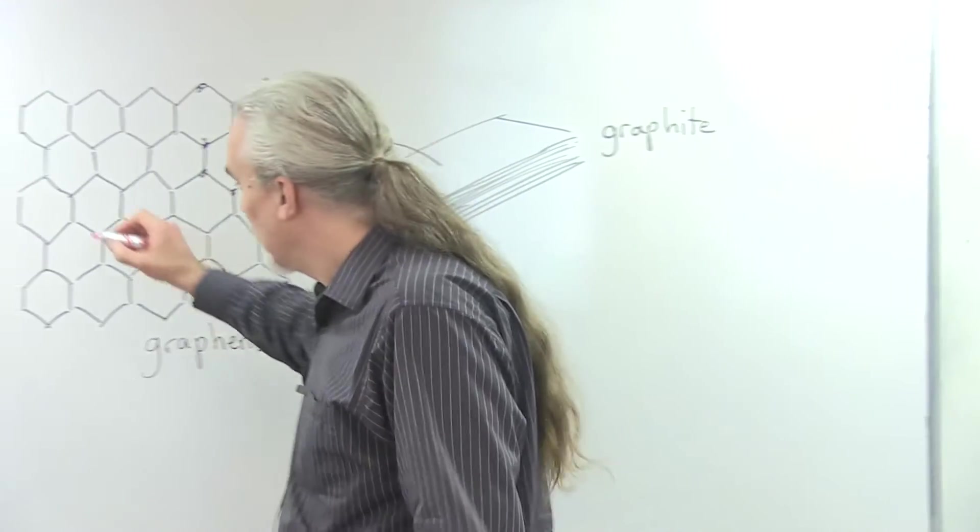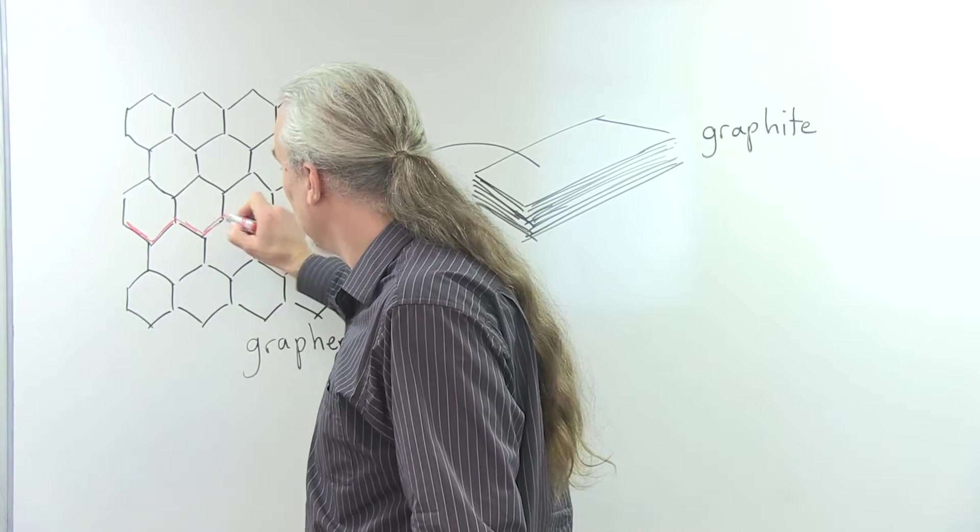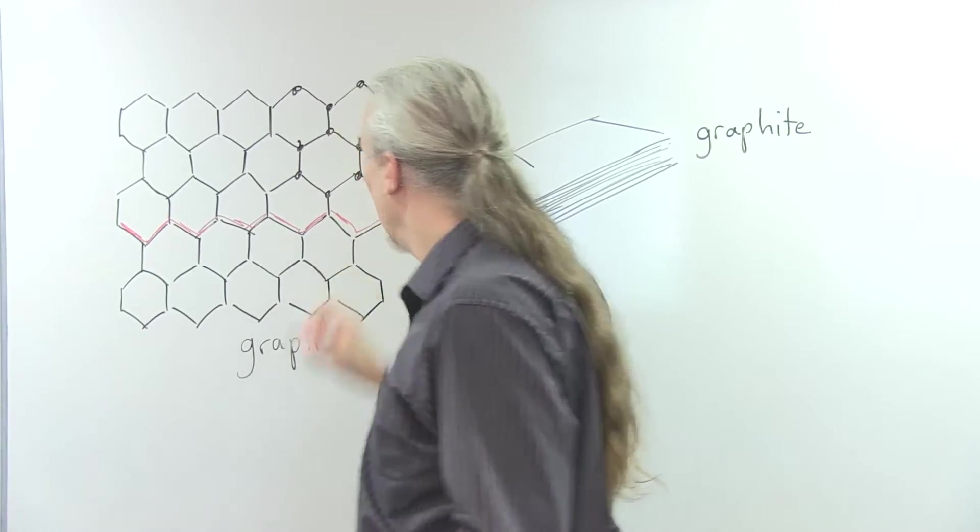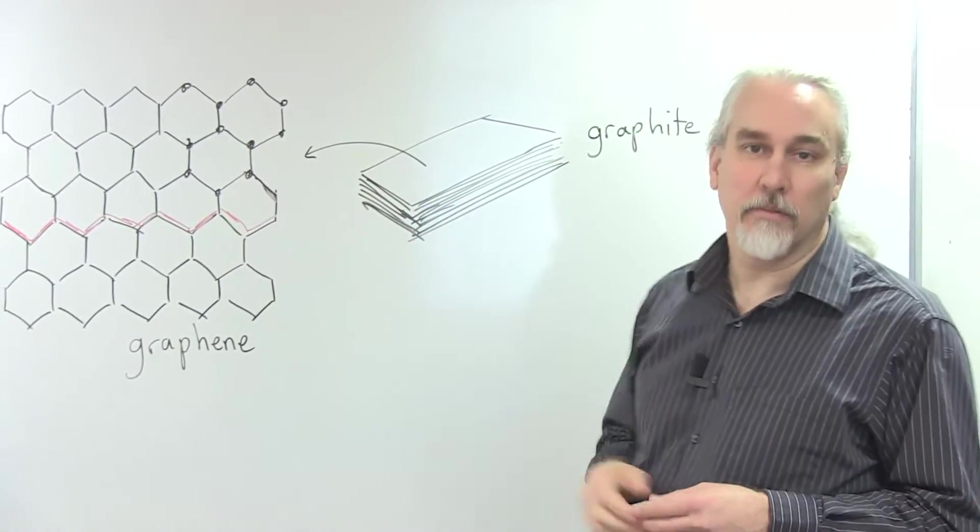So you can see that there are collections of bonds here that make a kind of a zigzag pattern, and along those directions, graphene conducts electricity. Electrons can pass along those directions.